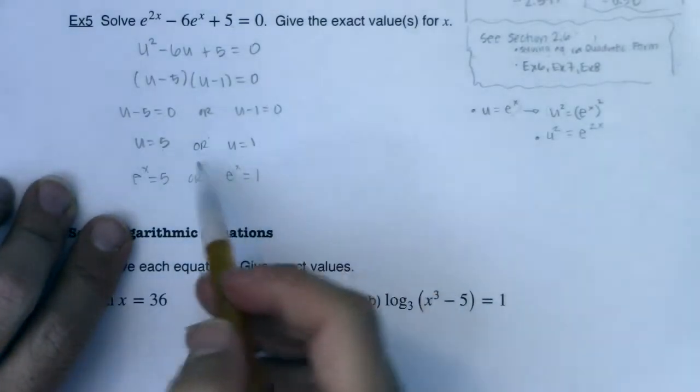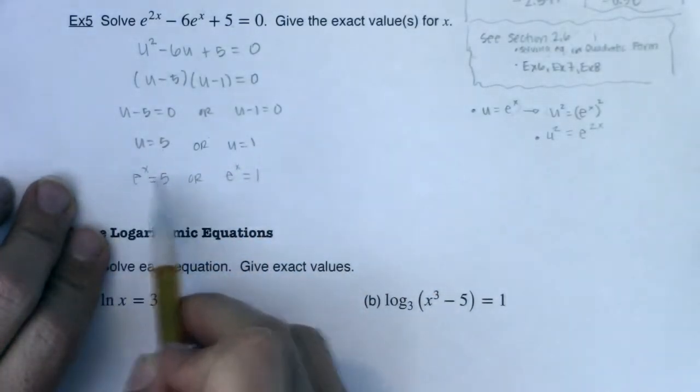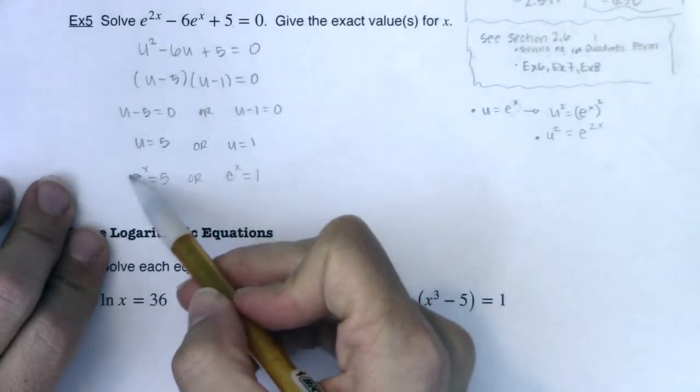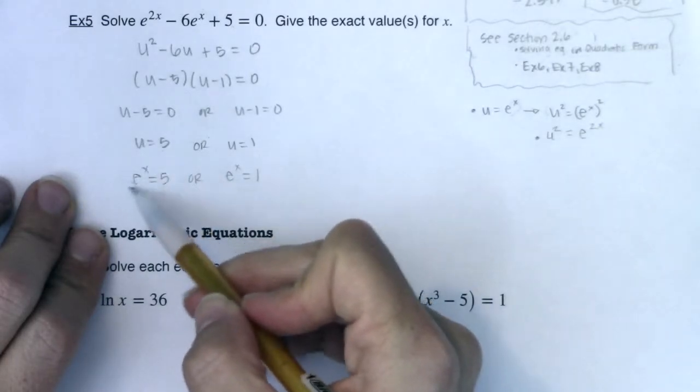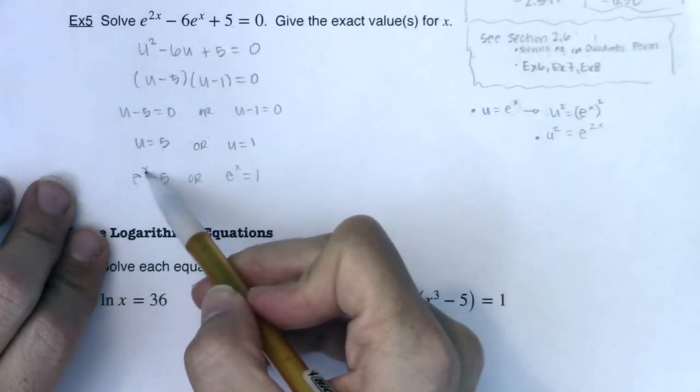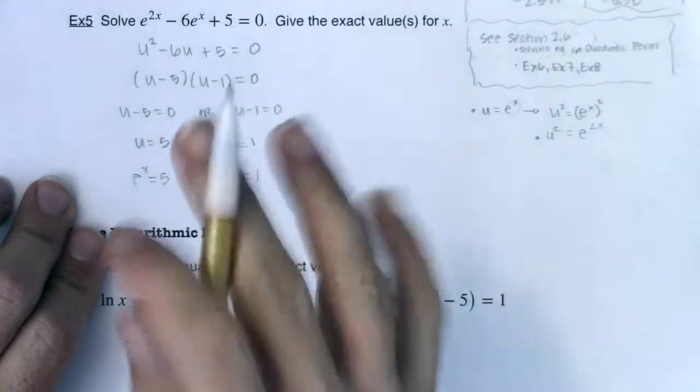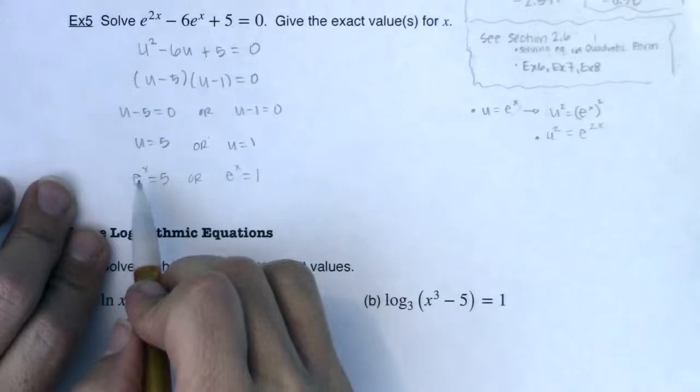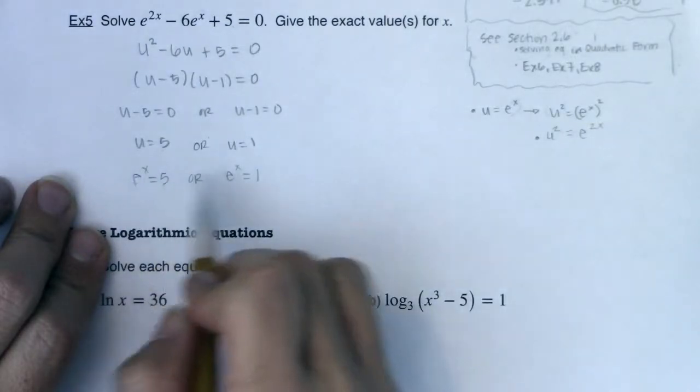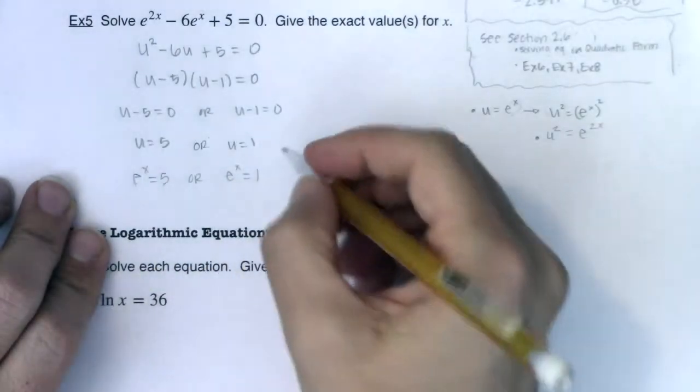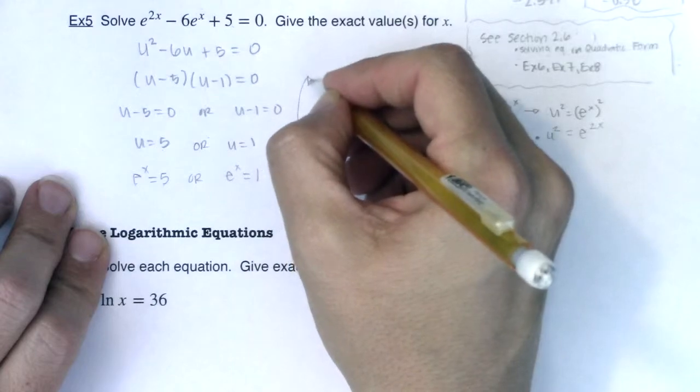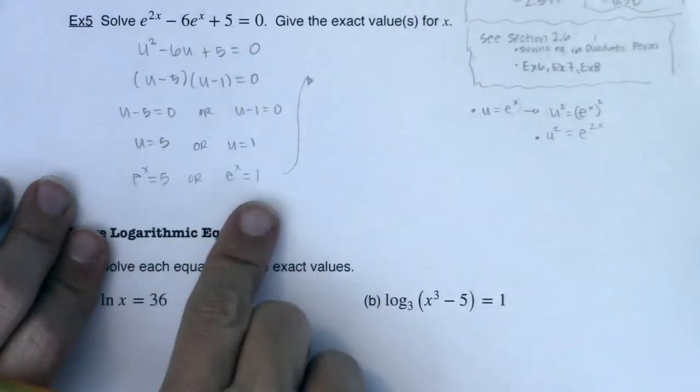And at this point, I now have an exponential equation. I technically have two of them. But take a look. I have an exponential equation. You see my exponential expression on the left because my variable is up in the exponent. And the bases of these exponential equations are not the same. I have an e over here. I have a 5 here. I have an e over here. I have a 1 here.